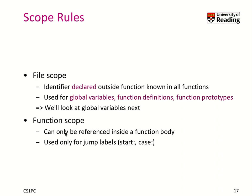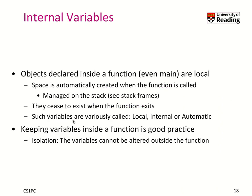We also have function scope. It means a variable can be referenced only inside a function body, and it is used for jump labels. You cannot jump from code in one function to another function — that doesn't work. This is basically irrelevant; nice to know that function scope exists, but we don't use it much.